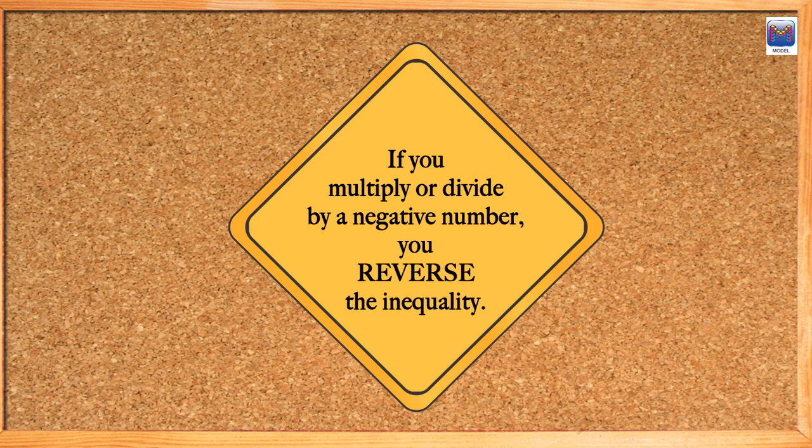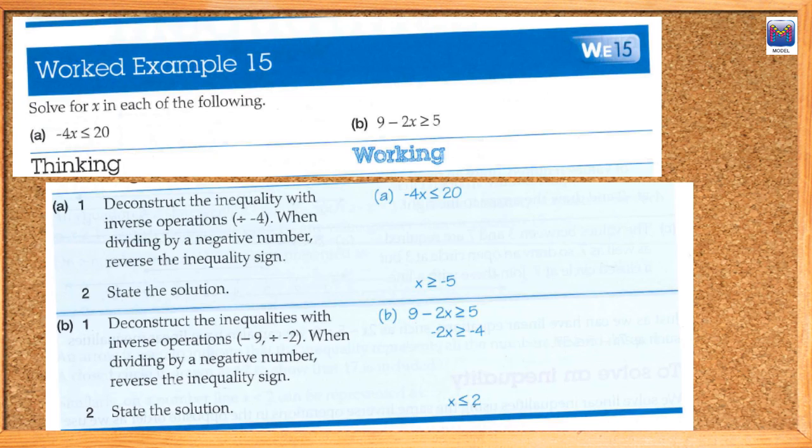Now, if you multiply or divide by a negative number, you reverse the inequality. I'll show you an example of that in a minute. So if you've got a symbol that's that way, you turn it around if a negative number is involved in a multiplication or division. How does that look? Let's have a look at this one. Negative 4x is less than or equal to 20.